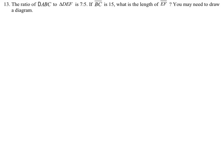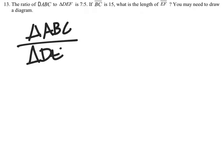Once again, we get a proportion here comparing the two triangles, triangle ABC and triangle DEF. It says that this ratio is 7 to 5.